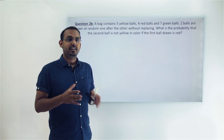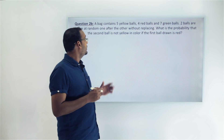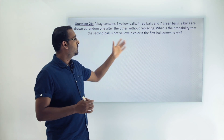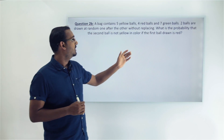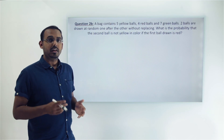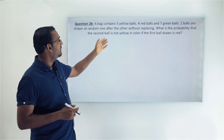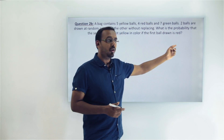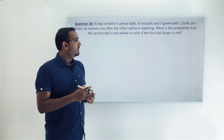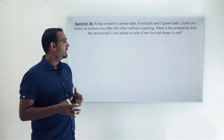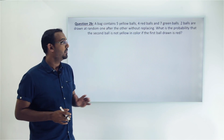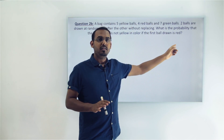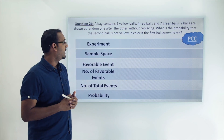Now let's solve another type of question with the same experiment. A bag contains 5 yellow balls, 4 red balls, and 7 green balls — the same setting. Two balls are drawn at random, one after the other, without replacing. What is the probability that the second ball drawn is not yellow in color, if the first ball drawn is red? We need to find the probability that the second ball is not yellow — it can be green or red, but not yellow — after drawing the first ball which is red.